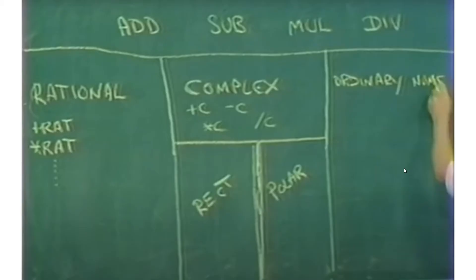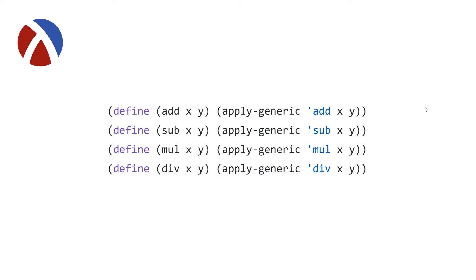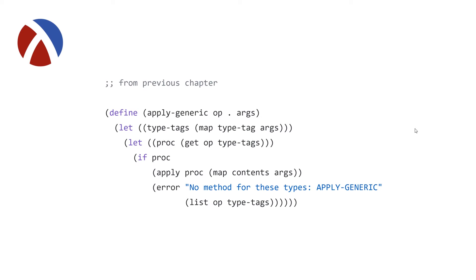This is also shown in the MIT lecture with a similar diagram on the chalkboard — rational, complex with two different representations, and ordinary numbers. We have four different procedures, add, sub, mul, and div, that make use of the apply-generic procedure which we saw in chapter 2.4, and these dispatch based on the corresponding tags.